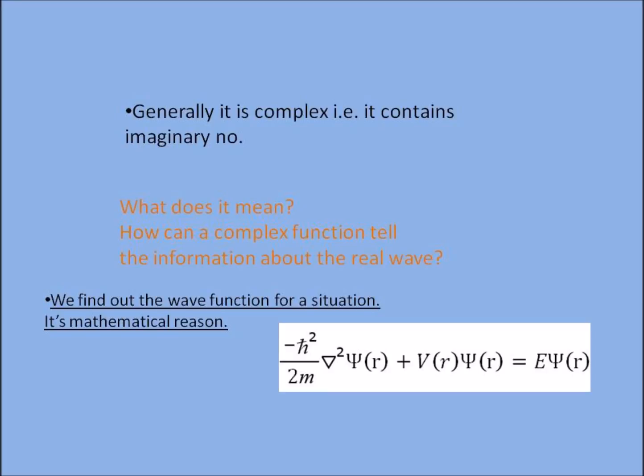Here are some solutions of these questions. We find out the wave function for a particular situation. This is a mathematical reason, so from this Schrödinger equation we find out the wave function which satisfies the given condition. That's why the complex solution is the general solution.